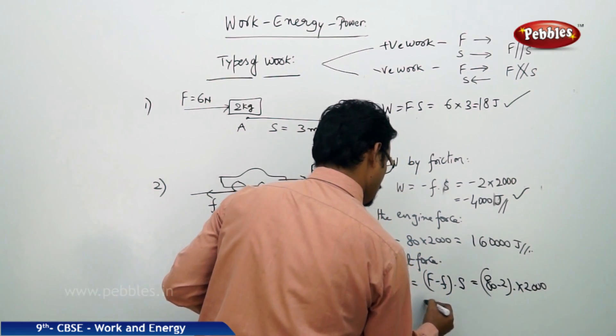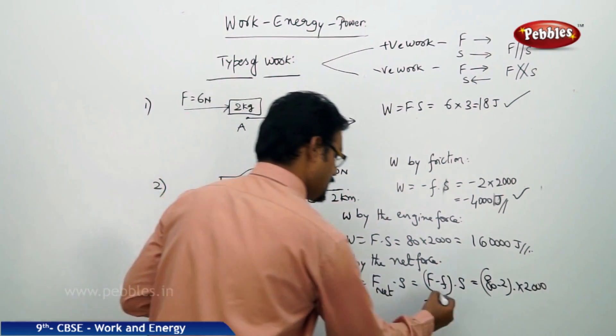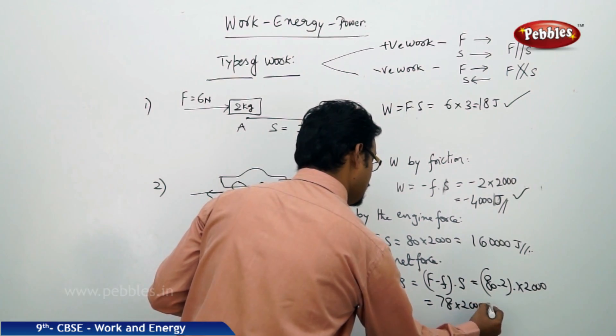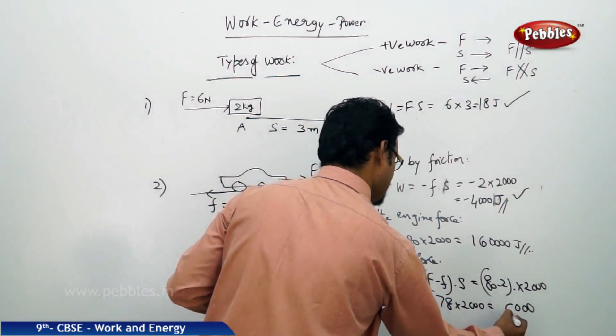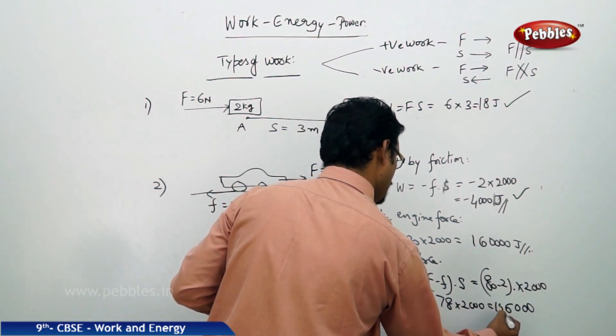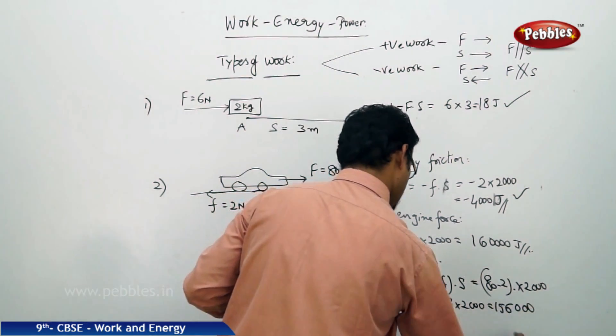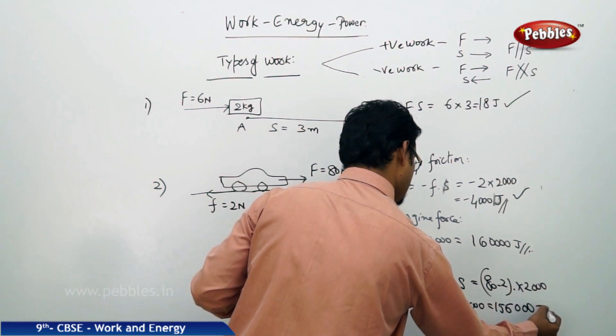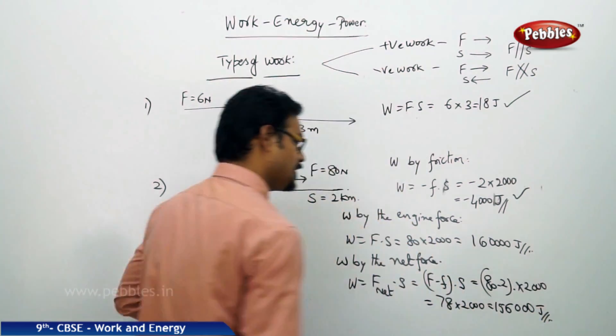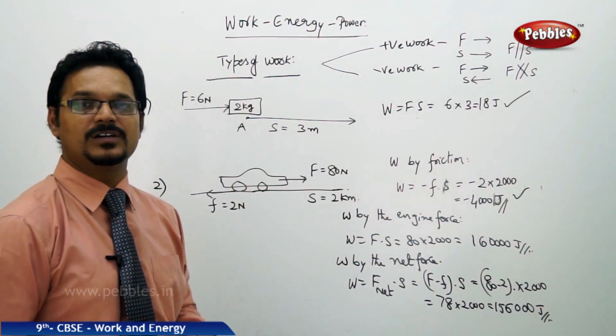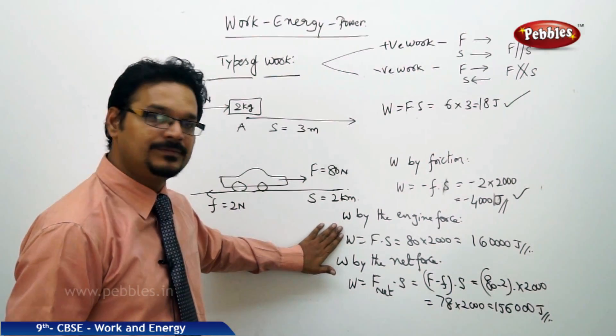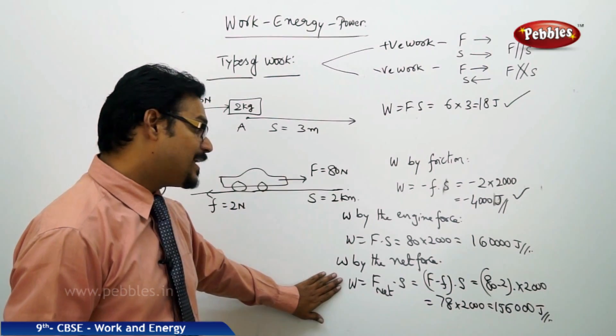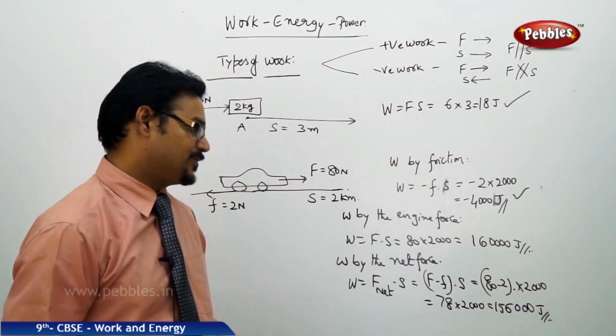So 80 minus 2 into displacement is 2000 meters. So how much it is? 78 into 2000 equals to 156,000 joules is the net amount of work done. See, this is the work done by the engine, this is the work done by the net force, and that's the work done by the frictional force.